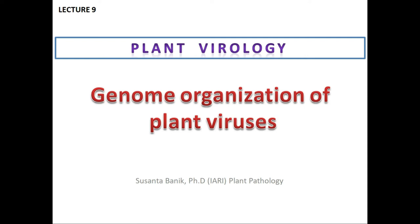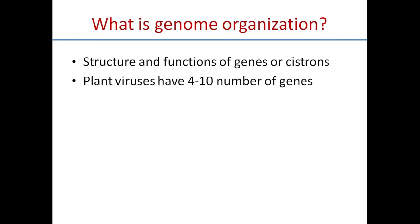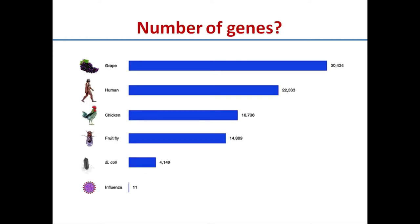Hello everyone, we are going to learn about genome organization of plant viruses. Genome organization refers to the structure and functions of genes or cistrons. We know that plant viruses have genes ranging from 4 to 10 in number. How these genes are organized in a plant virus genome is the subject matter of genome organization — the functions of genes and their relative arrangement.